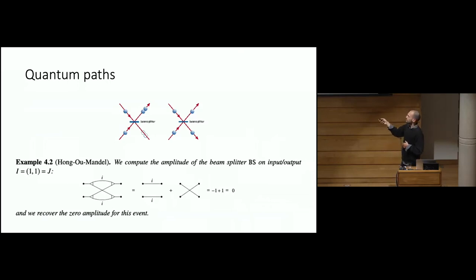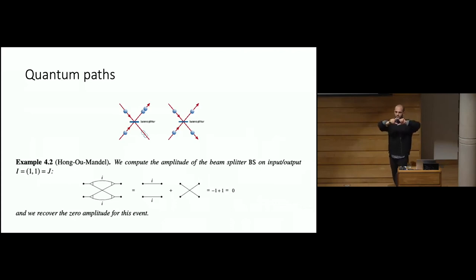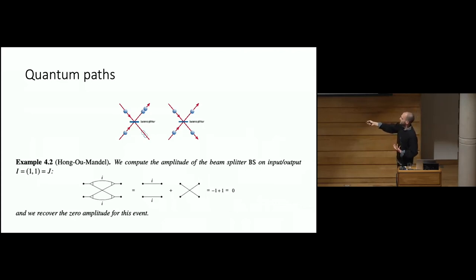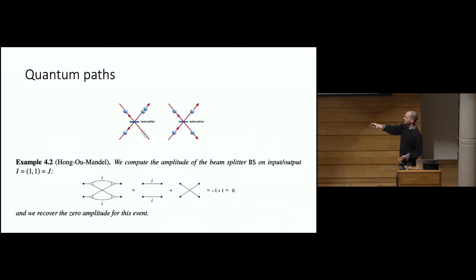The Hong-Ou-Mandel effect says that if you have a beam splitter and throw two photons at it simultaneously — within a coherence time — you would expect them to either both go up, both go down, or one each way. But what happens in practice is that the possibility of them going each their own way cancels out. The photons always bunch together. You can prove this in the Q-path calculus: starting from the diagram for two photons entering the two modes, applying the beam splitter matrix, and post-selecting on one photon on top and one on the bottom, you get two terms that cancel out, giving zero probability.